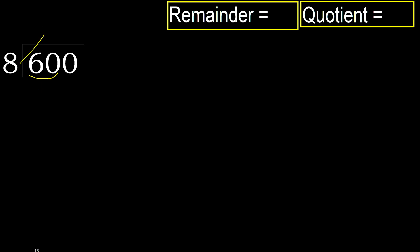8 multiplied by which number is nearest to 60 but not greater? 8 multiplied by 8 is 64, which is greater. 8 multiplied by 7 is 56, which is not greater. Subtract: 60 minus 56 is 4.